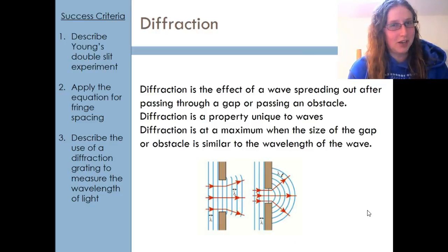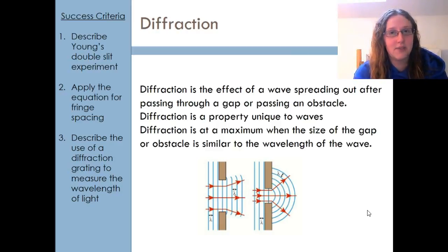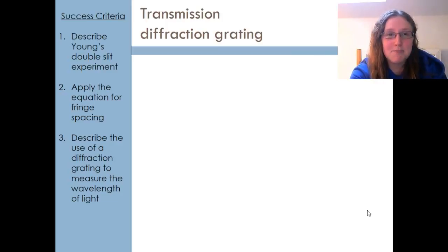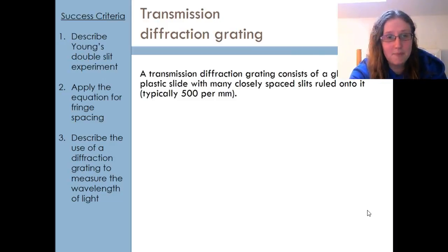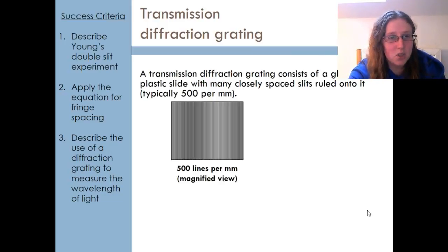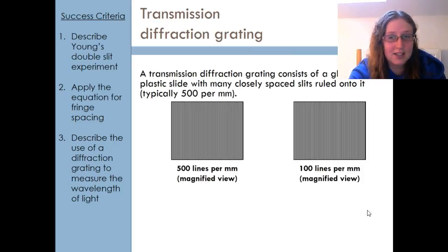What I don't expect you to know is how this can be applied and how it can be combined with superposition to create some very interesting effects. There are things called transmission diffraction gratings. Transmission basically means that the light passes through it and the diffraction grating causes lots of instances of diffraction. These are basically made of glass or plastic with loads of holes rolled into them, typically 500 per millimeter.